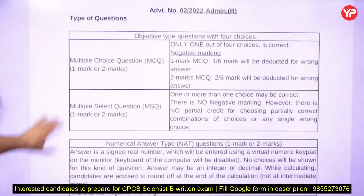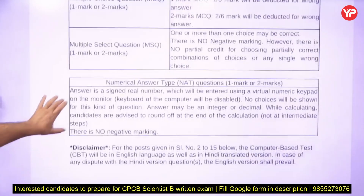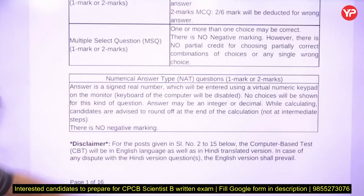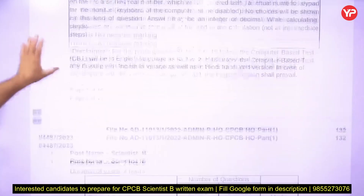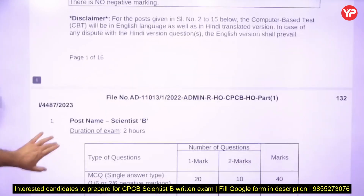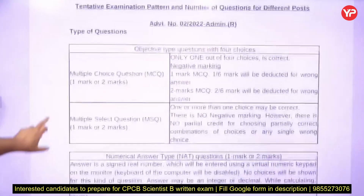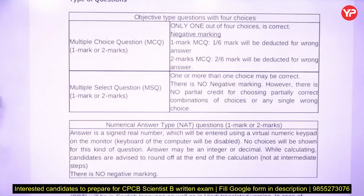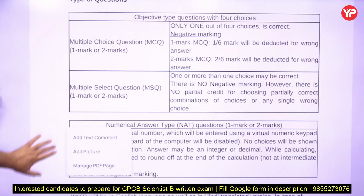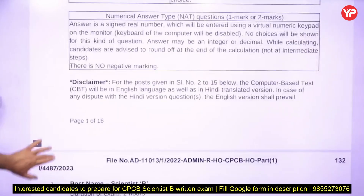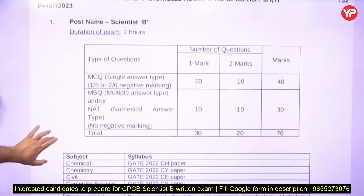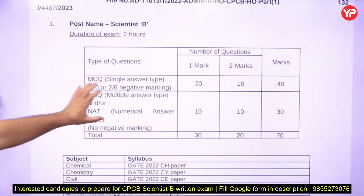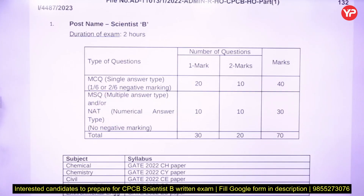The types of questions that will come include numerical answer type questions. So to summarize: objective type questions will come — one mark and two mark — non-numerical answer type questions will come — one mark and two mark. MCQs, MSQs, and NAT questions — you people should already be aware of these.